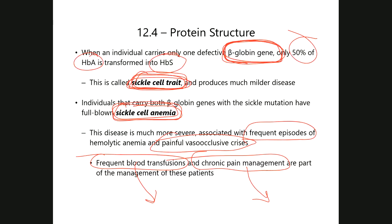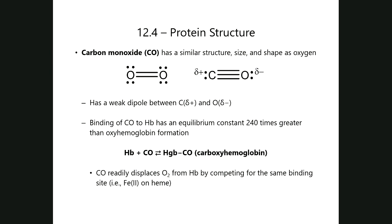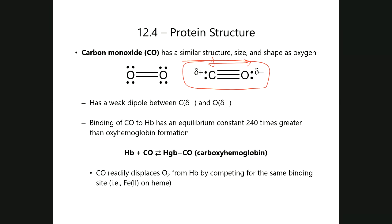We need to talk about another important aspect of hemoglobin: carbon monoxide poisoning. Carbon monoxide, if you compare its structure to oxygen, has a similar structure and size and shape when compared to O2. The only difference is that O2 is completely nonpolar, whereas CO has polarity between carbon and oxygen because of the difference in electronegativity. It turns out that hemoglobin can bind carbon monoxide with much higher strength than it can bind oxygen.